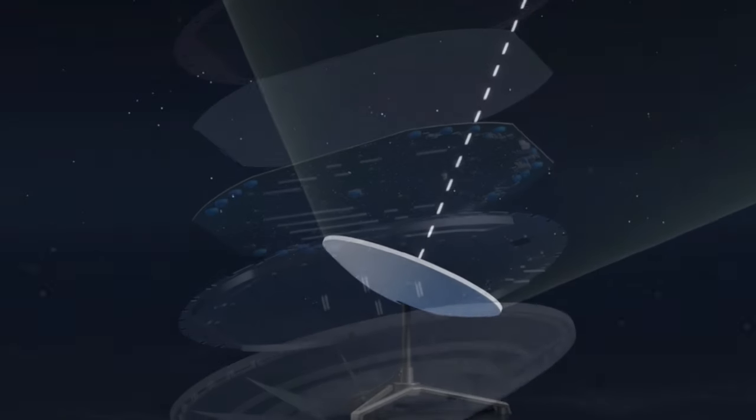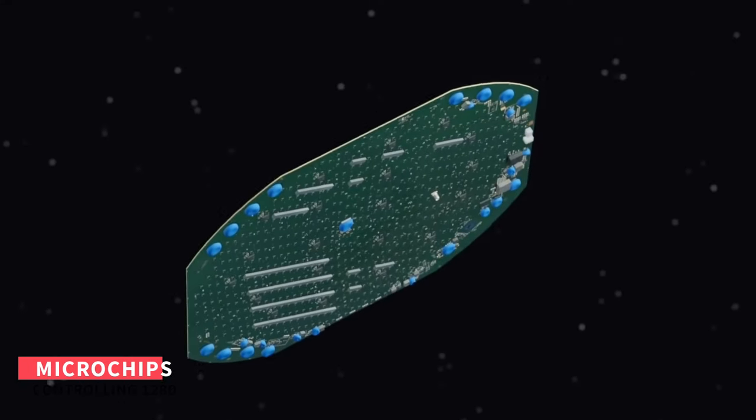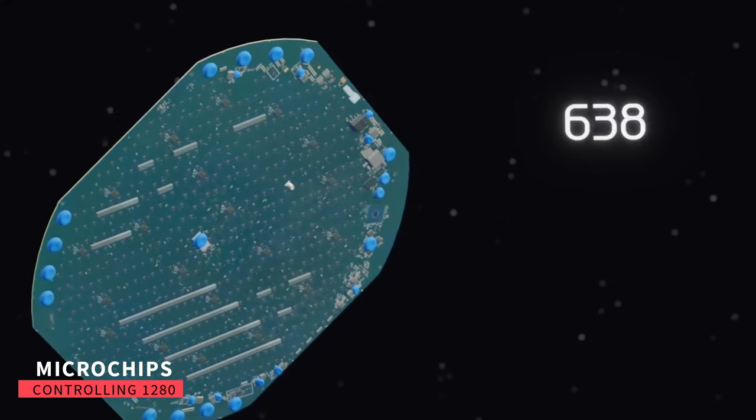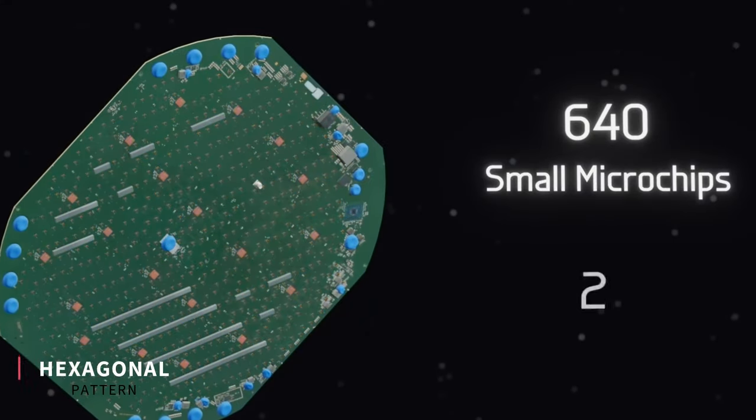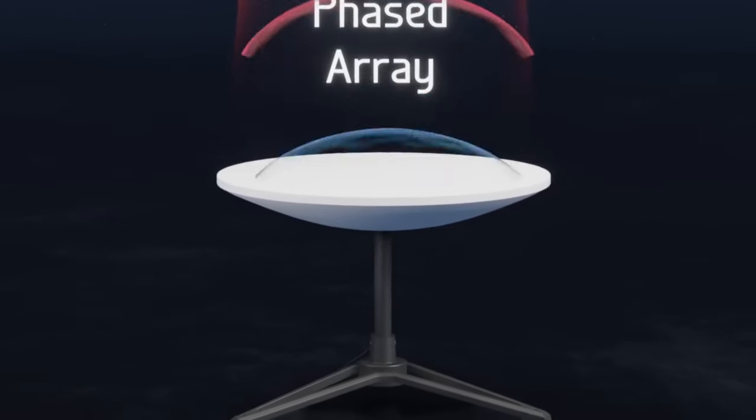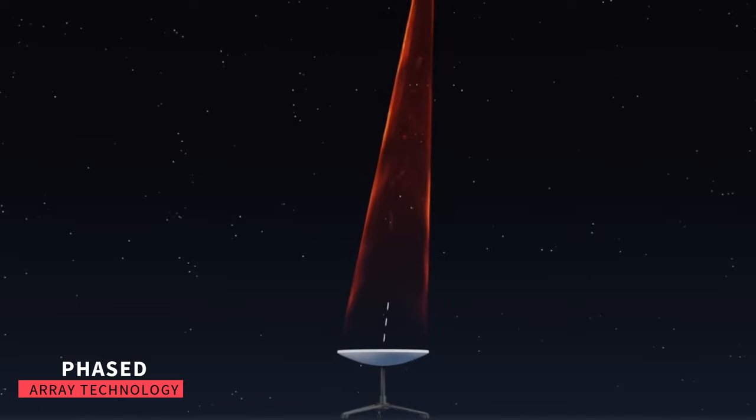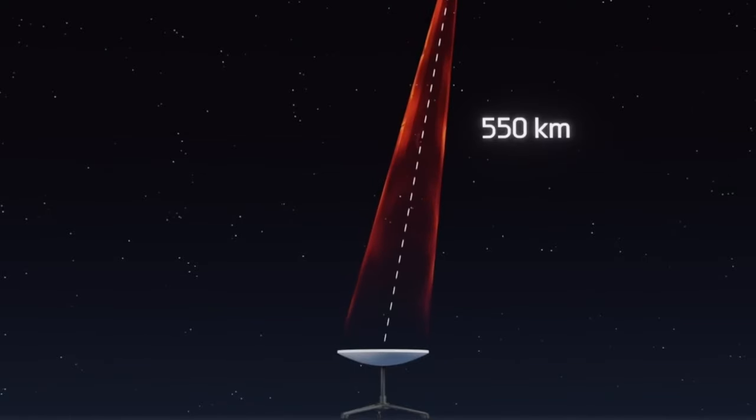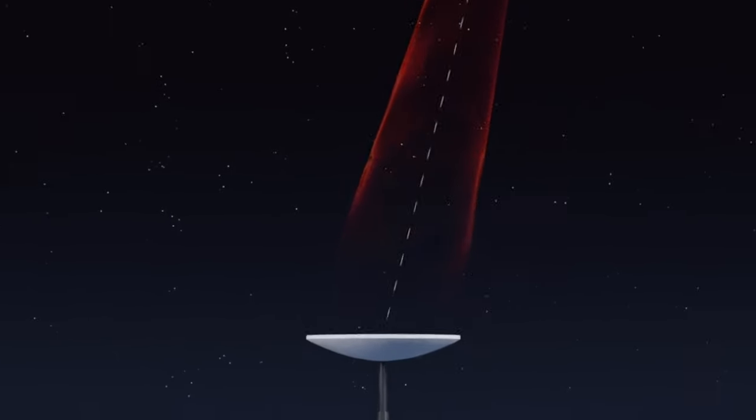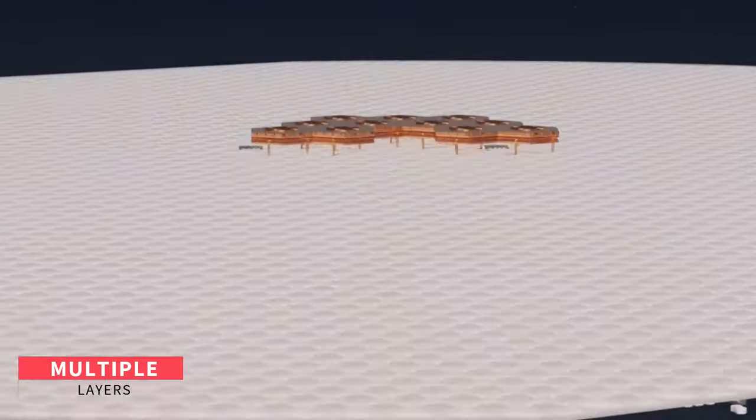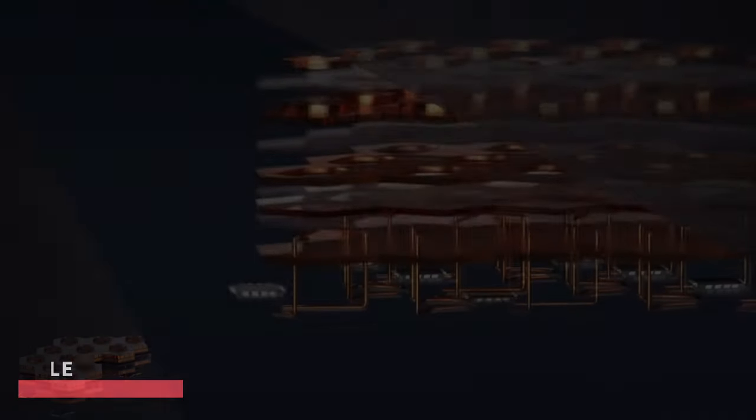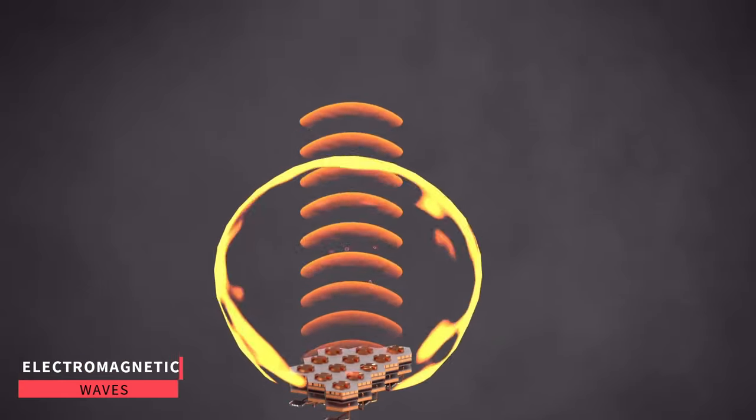Inside the Dishy, we find a complex array of microchips controlling 1,280 antennas arranged in a hexagonal pattern. These antennas communicate with the satellite using phased array technology, sending and receiving angled electromagnetic pulses. Each antenna comprises multiple layers within the circuit board, generating electromagnetic waves through intricate processes.